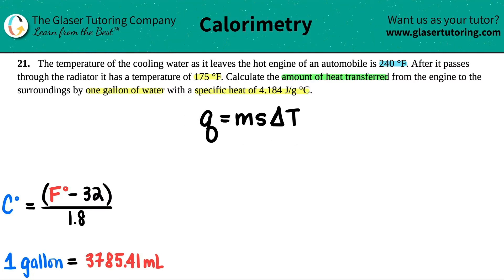They told us that the water had a specific heat of 4.184, so that's the s. Specific heat: 4.184 joules per gram degrees Celsius. Now, if the specific heat is in degrees Celsius, that means that the temps that I use when I do my delta T also have to be in degrees Celsius. But uh-oh, they gave me 240 degrees Fahrenheit and 175 degrees Fahrenheit.